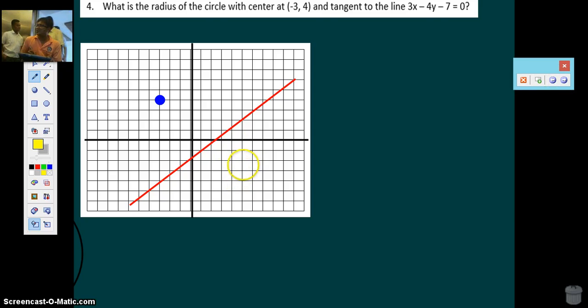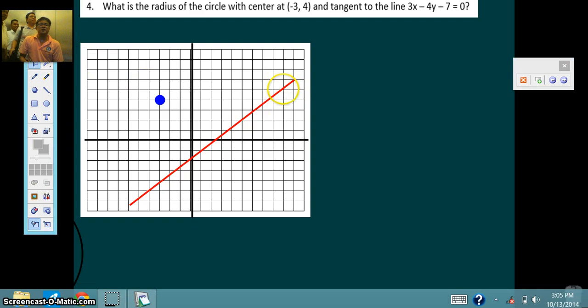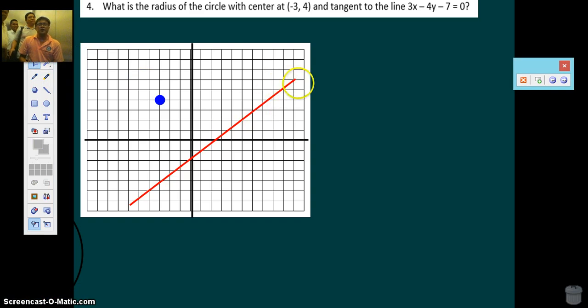Fourth example. What is the radius of the circle with center negative 3, 4 and tangent to the line 3x minus 4y minus 7 equals 0? Red line. I plotted the red line. Red line is the red line.